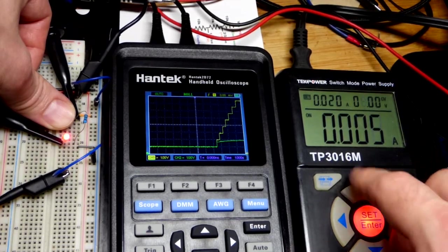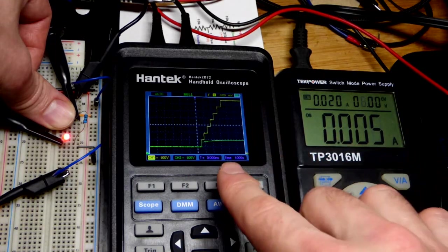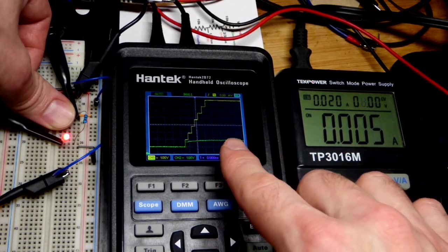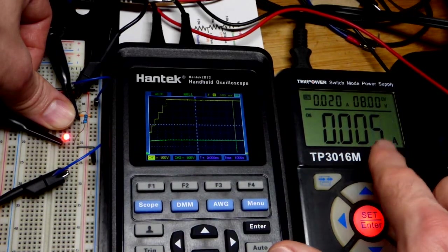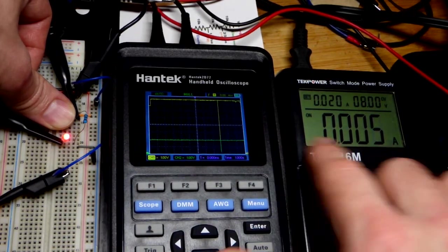Now we're going to raise the total voltage to eight volts. Two volts across the LED, about six volts across the 1000 ohm resistor, so we have about six milliamps of current, probably a spec shy.